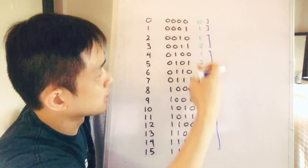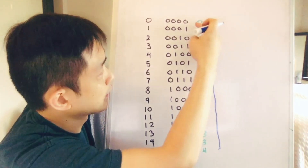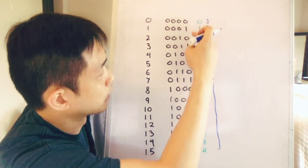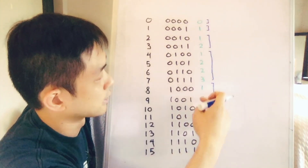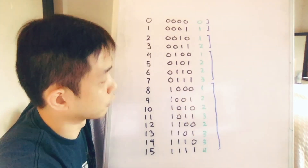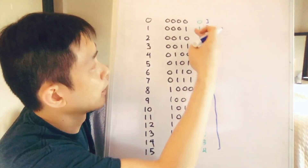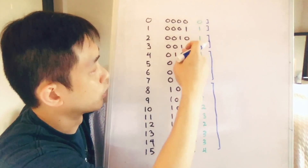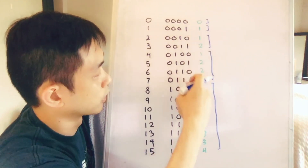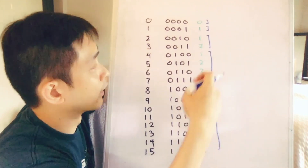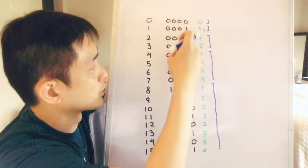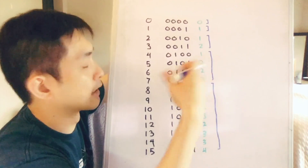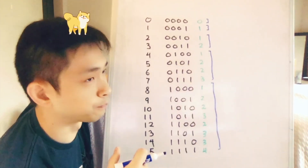Let's start at the first position. We see that the pattern goes 0, 1, 0, 1, 0, 1, 0, 1 all the way through, right? The second position goes 0, 0, 1, 1, 0, 0, 1, 1. And the third position goes 0, 0, 0, 0, 1, 1, 1, 1 and so on and so forth.